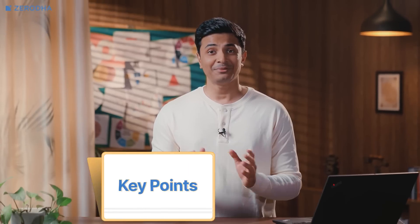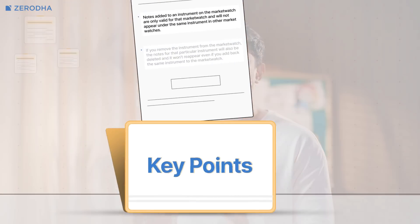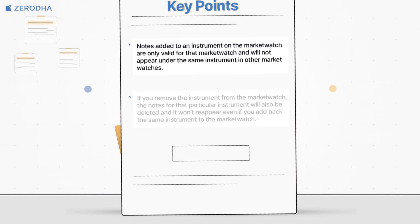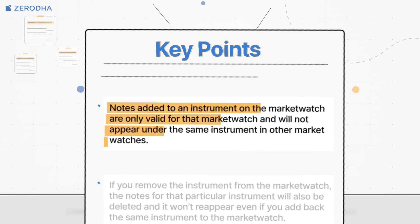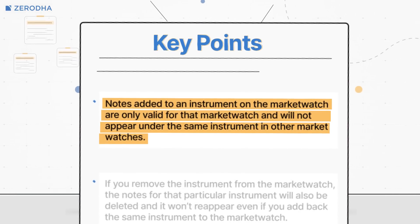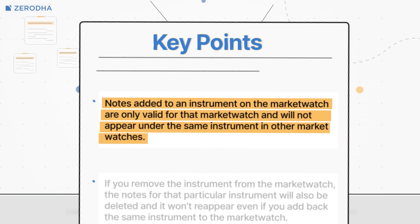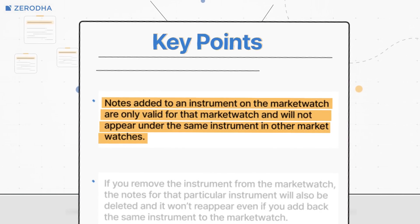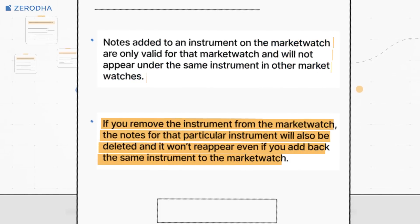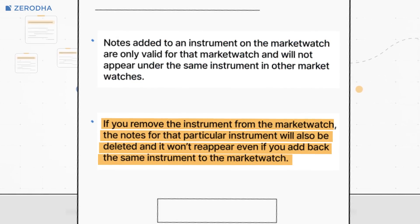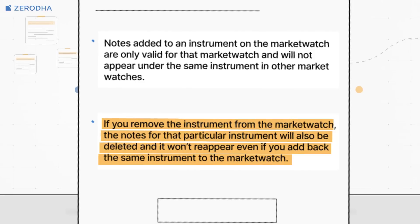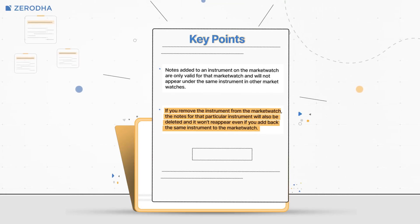A couple of things to keep in mind. Notes added to an instrument on one market watch will be valid only for that market watch and will not appear in any other market watches for the same instrument. If you remove the instrument from the market watch, the notes for that particular instrument will also be deleted and will not reappear even if you add back that instrument to the market watch.